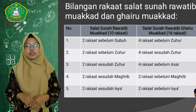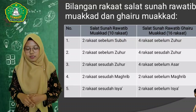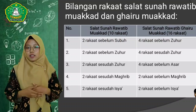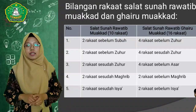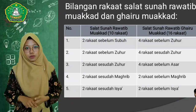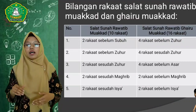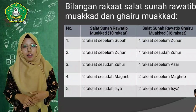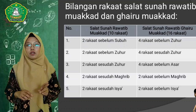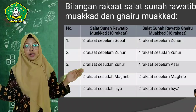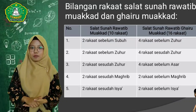Selanjutnya yaitu jumlah bilangan sholat sunnah rawatib ghair mu'akad. Jumlah rakaat keseluruhannya ada 16, yaitu di antaranya: empat rakaat sesudah dzuhur, empat rakaat sebelum dzuhur, empat rakaat sebelum asar, dua rakaat sebelum maghrib, dan dua rakaat sebelum isya. Jumlah keseluruhannya yaitu 16 rakaat.